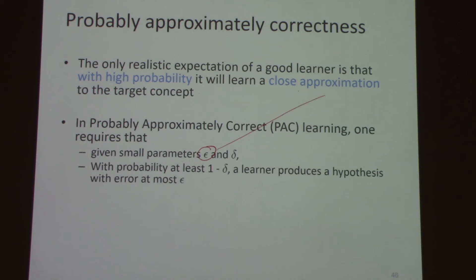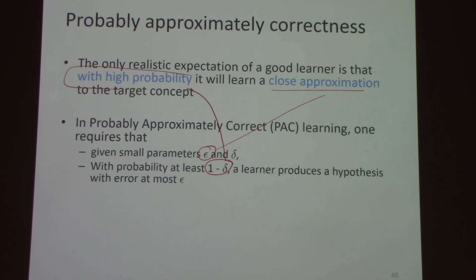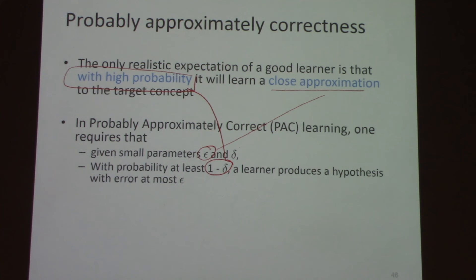Epsilon is the way of asking how close your approximation is. If epsilon is very small, that means your error is small — think of epsilon as the error of your learned classifier. One minus delta is the probability that you will get a close approximation. In an ideal world, you want epsilon to be 0 — zero error — and delta also to be 0, meaning with certainty you get a perfect classifier. With delta small, or 1-minus-delta high, you hope to get a classifier that is almost correct, meaning epsilon is small.